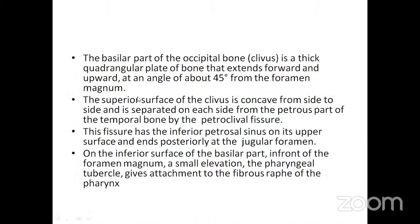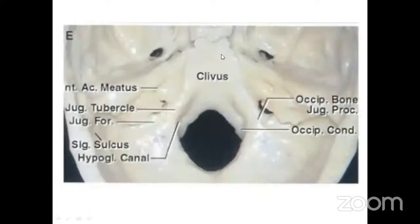The basal or clival part of the occipital bone forms the anterior wall of the foramen magnum. It is a thick quadrangular plate extending forward and upward at about 45 degrees. Its superior surface is concave side-to-side, separated from the petrous part of the temporal bone by the petroclivaI fissure, which contains the inferior petrosal sinus. On the anterior surface, the pharyngeal tubercle gives attachment to the fibrous raphe of the pharynx.